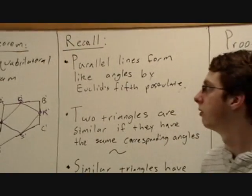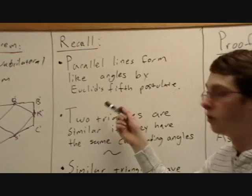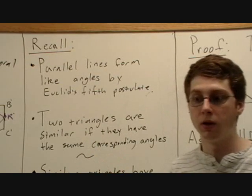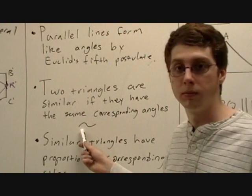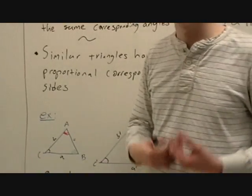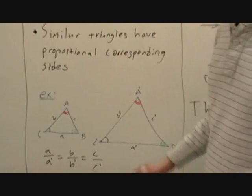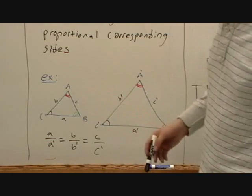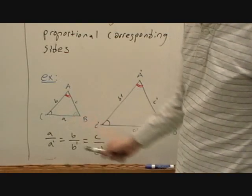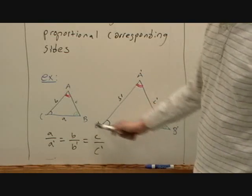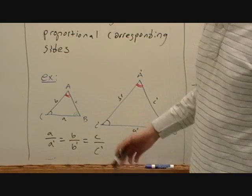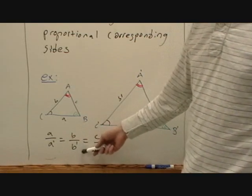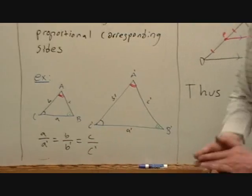Here are the key pieces of information we'll need to prove this. Parallel lines form like angles, by Euclid's fifth postulate. Two triangles are similar if they have the same corresponding angles, and we denote similarity between triangles with this symbol. Similar triangles have proportional corresponding sides. In this example, we have triangle ABC and triangle A'B'C'. This triangle is a bit bigger than this one, but the corresponding angles are the same, and from that we can say that corresponding sides are proportional — such as A over A' is the same as B over B', and the same as C over C'.